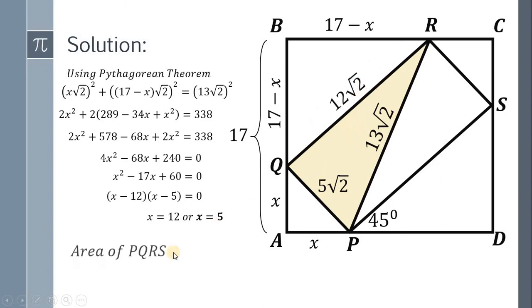Now to find the area of PQRS, this is just the base multiplied by the height, or simply 5√2 multiplied by 12√2. So we have 5 times 12 equals 60 multiplied by 2, which gives us 120 square centimeters. And we're done.